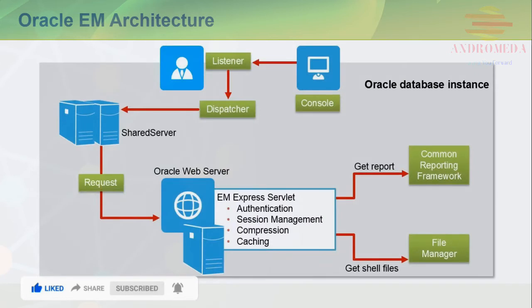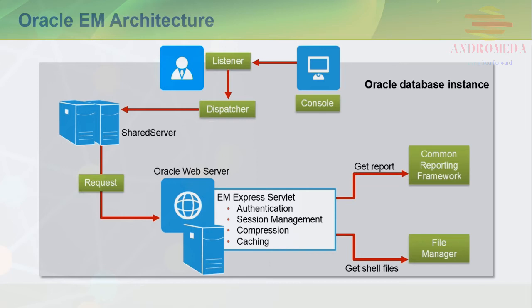This slide shows the EM Database Express architecture, which uses a web-based console communicating with a built-in web server available in XMLDB. As requests from the console are processed, the EM Database Express servlet handles the requests, including authentication, session management, and caching. The servlet passes requests for reports to the common reporting framework and actions requiring shell files to the file manager.